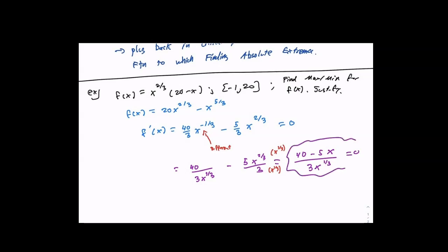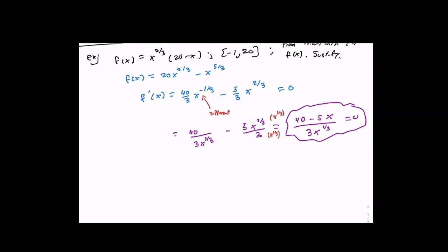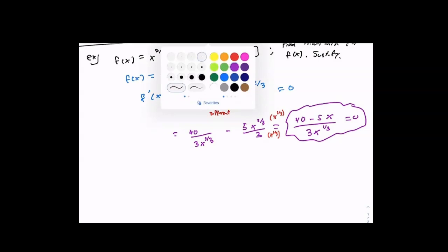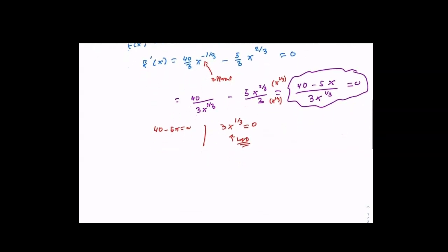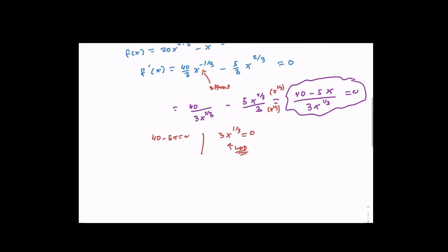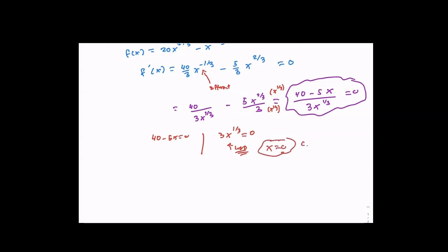This is what I'm trying to solve equal to zero. When finding critical points, I find where the function equals zero and where it's undefined. So I set 40 minus 5x equal to zero, and I set 3x to the one-third equal to zero. The denominator gives me the undefined case. Many people can recognize that plugging in x equals zero gives 0 to the negative one-third, which is undefined — so x equals zero is automatically a critical point. Solving the numerator gives x equals 8.